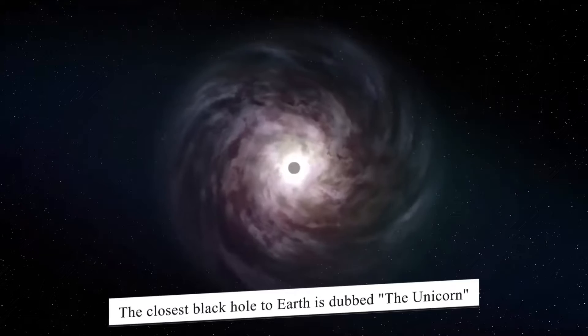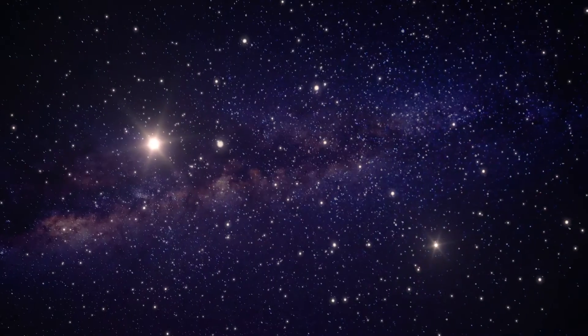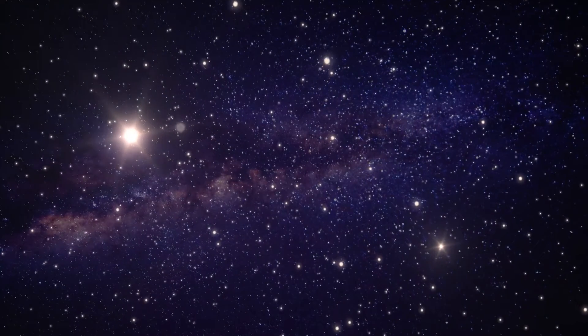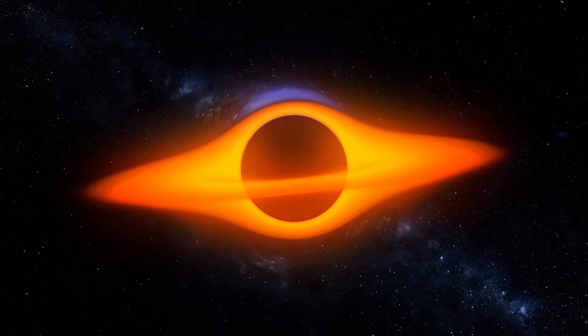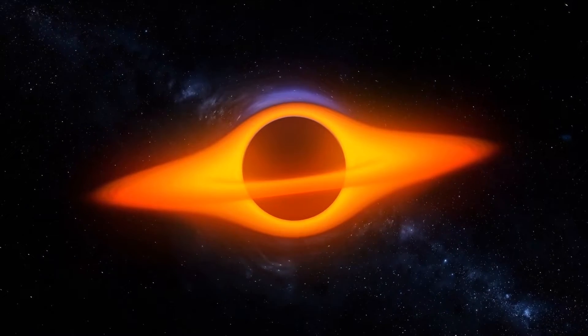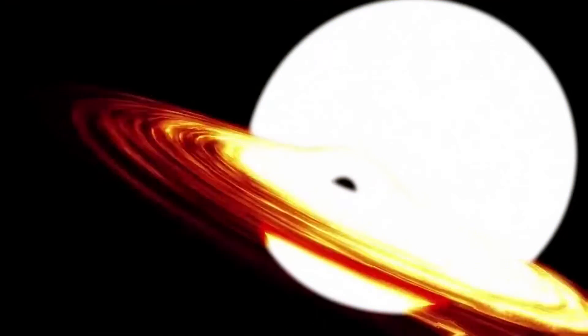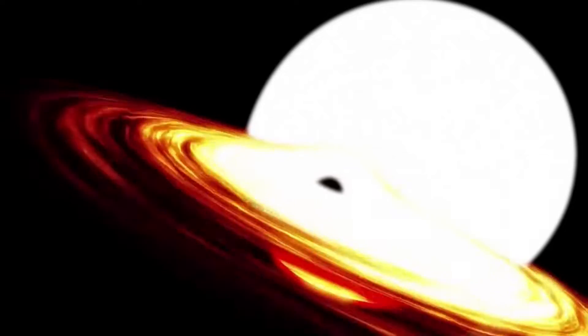The closest black hole to Earth is dubbed the Unicorn and is situated approximately 1,500 light-years away. The nickname has a double meaning. Not only does the black hole candidate reside in the constellation Monoceros, its incredibly low mass, about three times that of the Sun, makes it nearly one of a kind.